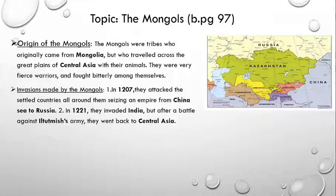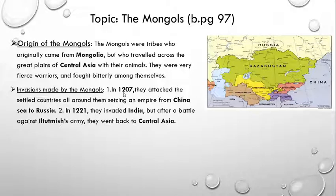Invasions made by the Mongols. Two prominent invasions were made by the Mongols under the command of their leader, Genghis Khan. He forced his tribe to unite together in one powerful force for the gain of more power and land. In 1207, they attacked the countries all around them, from the China Sea to Russia. As they were very fierce warriors, they began to attack the nearby areas around them starting from the China Sea to Russia.